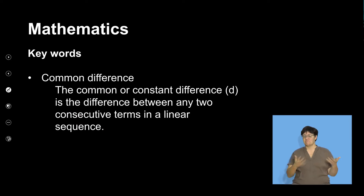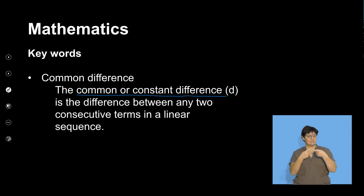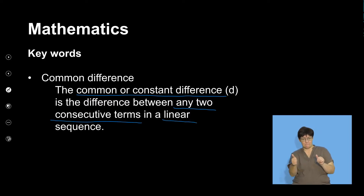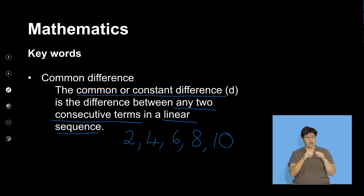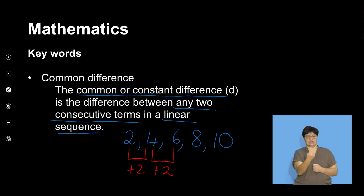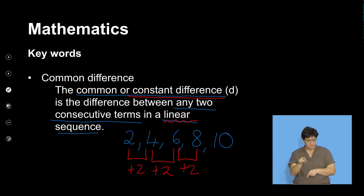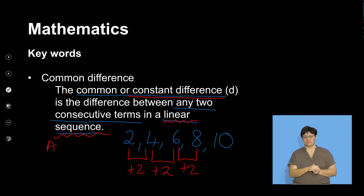The common or constant difference is the difference between any two consecutive terms in a linear sequence. So if I give you the pattern 2, 4, 6, 8, 10, we can see that we have a constant difference of positive 2 between the consecutive terms. Because I have that constant difference, it is a linear pattern or linear sequence — but we can also call this an arithmetic sequence.